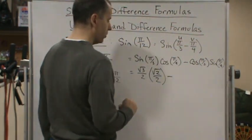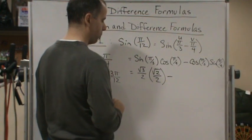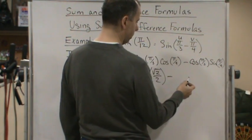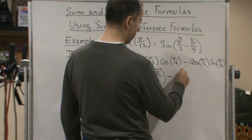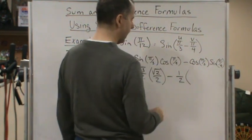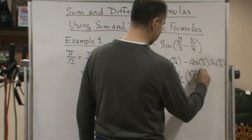And then cosine of pi over 3, that's going to be 1 half. And then sine of pi over 4 is going to be square root of 2 over 2. It's going to be the same thing.